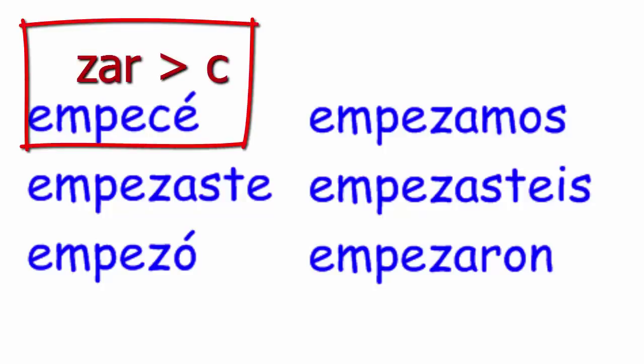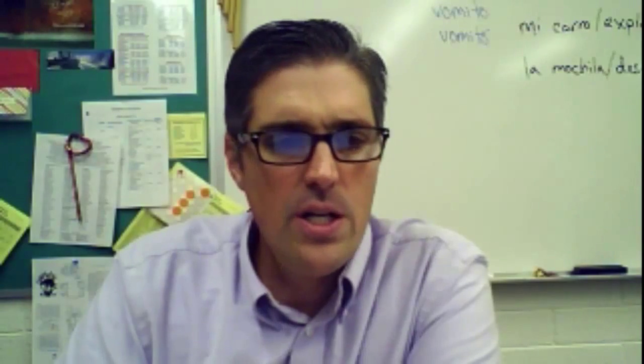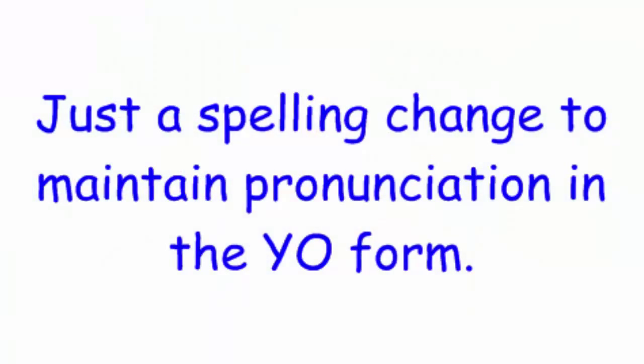The last of those three are zar verbs, like empezar and almorzar. Everything once again is normal except for the yo form, which changes to a C — empecé. Because remember, if a C is followed by an E, it takes on that S sound. So car, gar, and zar — just a spelling change to maintain the pronunciation in the yo form.